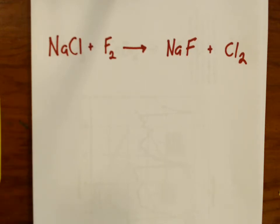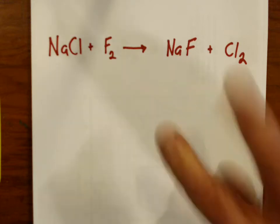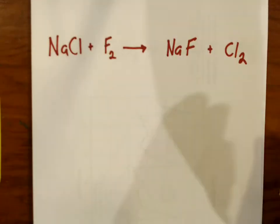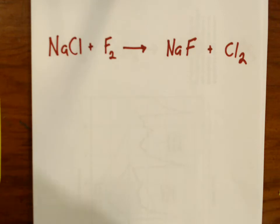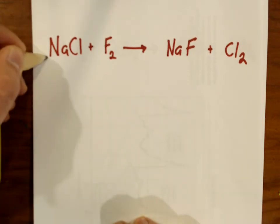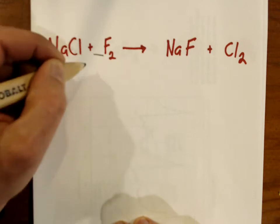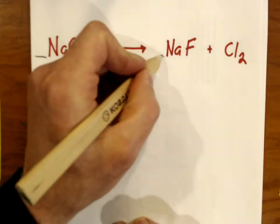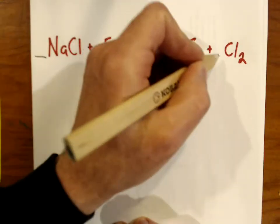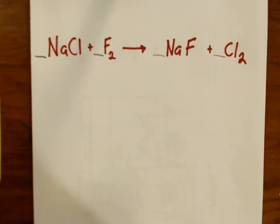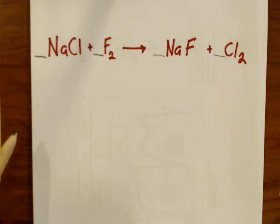When you go to balance a chemical equation, you're allowed to do two things and two things only. Thing number one is you're allowed to add a coefficient in front of any or all of the formulas that need a coefficient written there. The second thing you're allowed to do is you're allowed to change a coefficient.